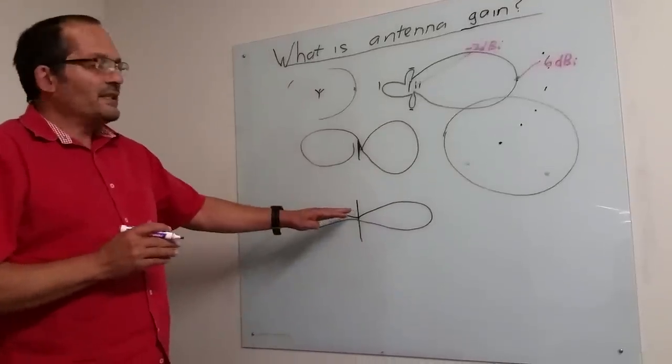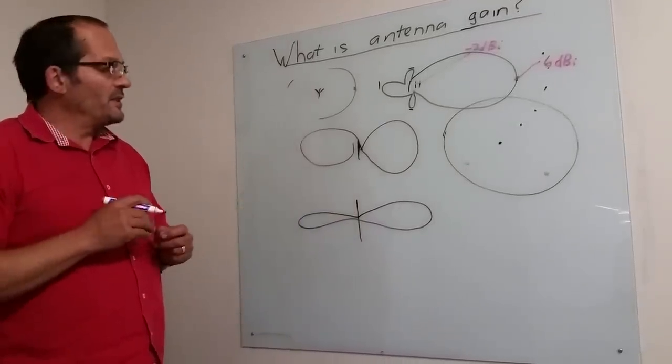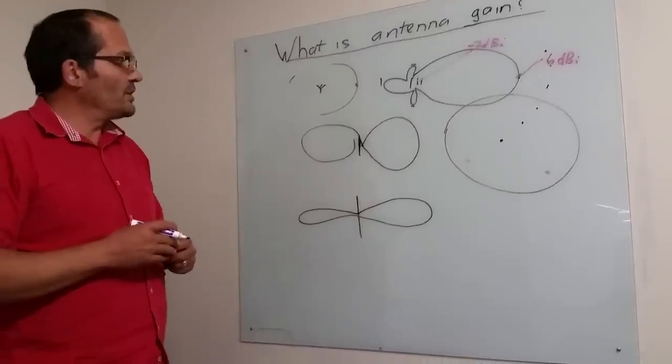So an omni is much easier to put up, and it gives you future-proofness if other strong signals should come, or it allows you to talk to more than one tower.